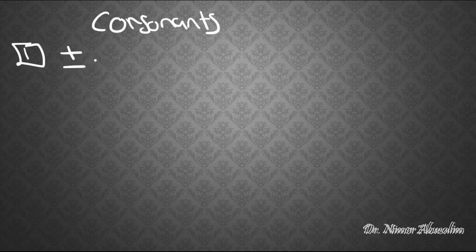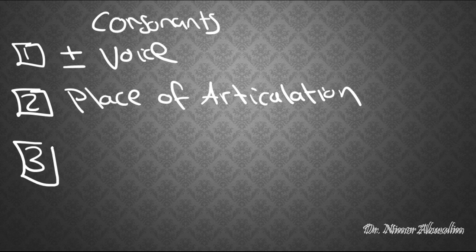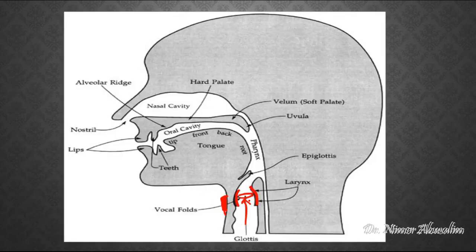Hello and welcome back to another lecture on phonetics. In our last lecture, we said that we can distinguish consonants based on three different factors. The first one we discussed was whether the sound is voiced or voiceless. The second one we will discuss in this class is called the place of articulation. In the lecture after this one, we will talk about the manner of articulation. Keep in mind that we're only talking about the English sounds here, so we're not going to cover all of the different sound types.